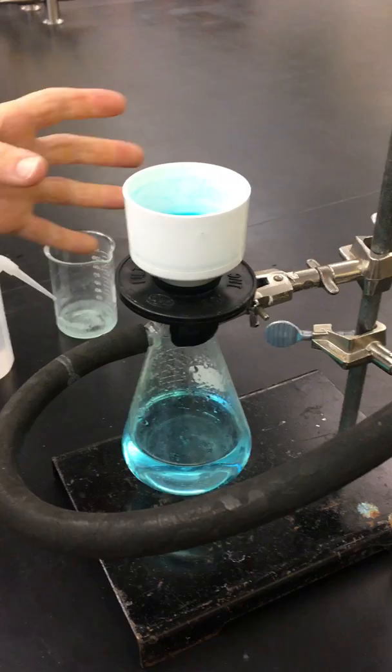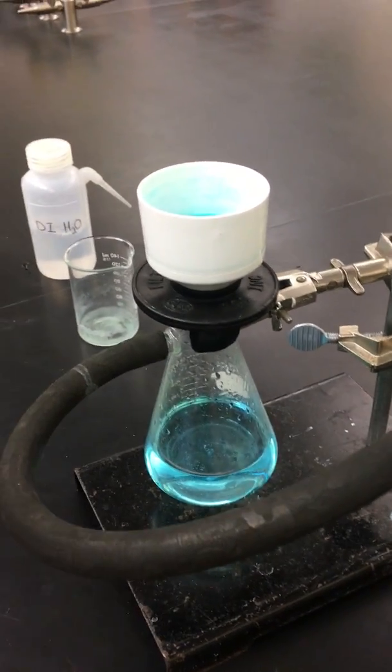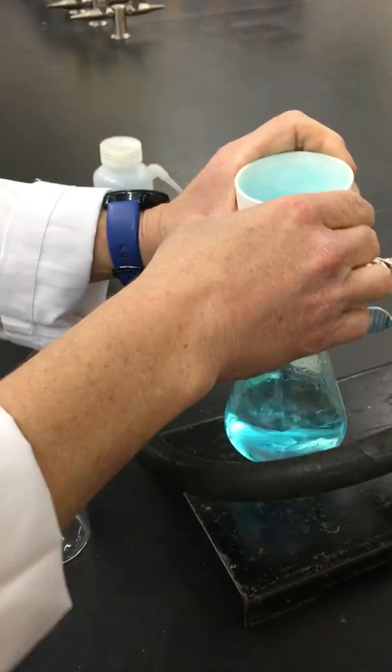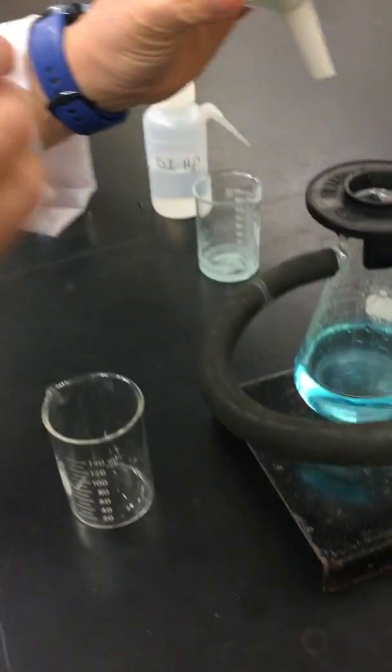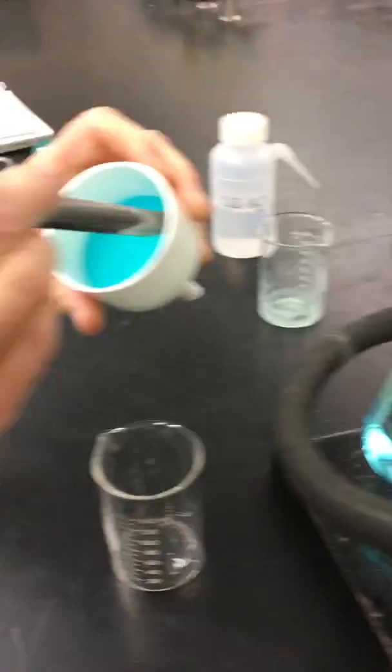And so our next step is we're going to take away the beaker, turn off our vacuum. Okay. And now we're ready to take our solid and transfer it to this beaker so that we can put it in an oven to remove any of the residual water.